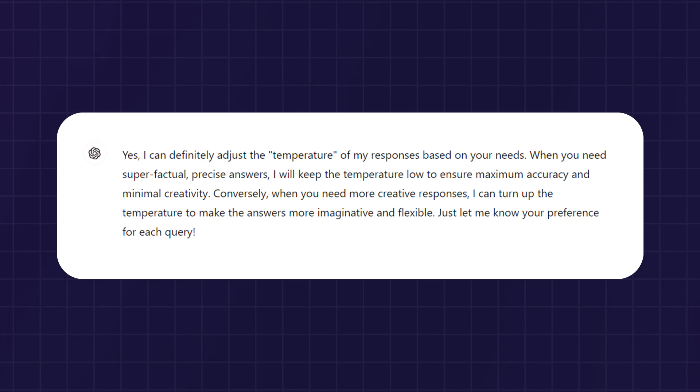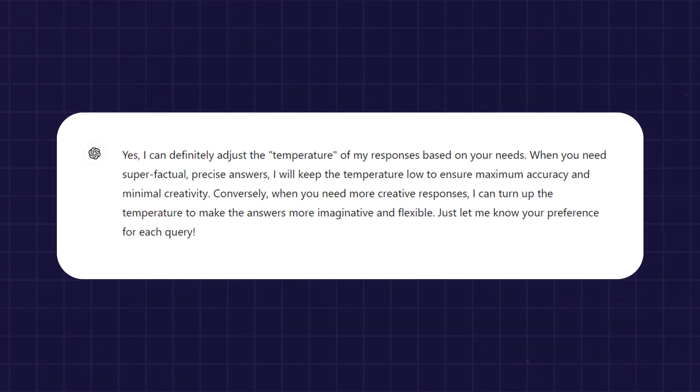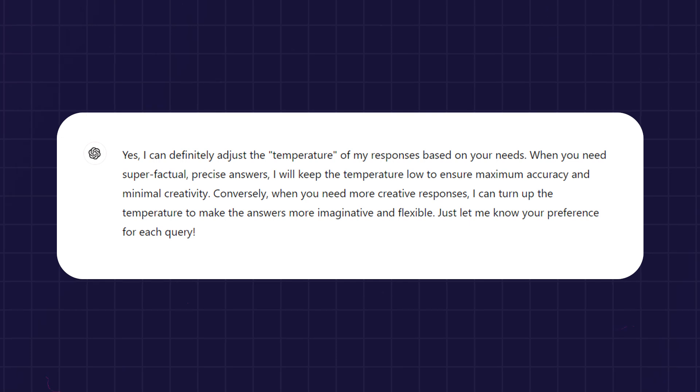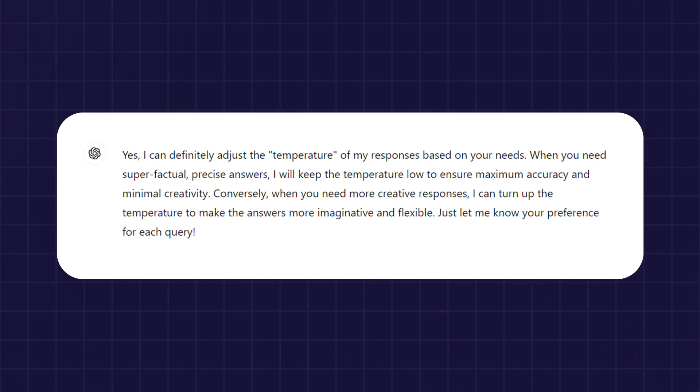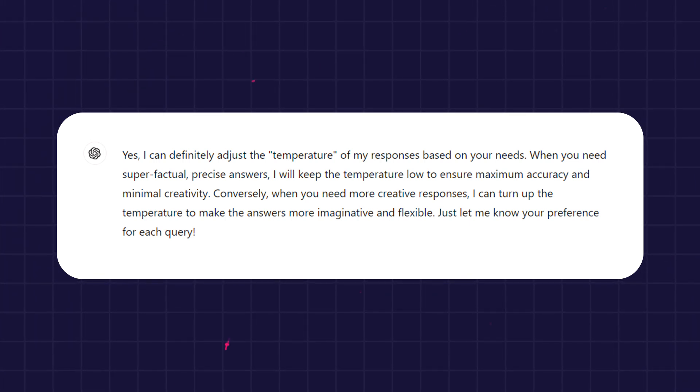Lower temperature, like 0.2, will make the responses more deterministic and focused, while higher temperature, like 0.8, will make the responses more creative and varied. I tried it myself — I asked ChatGPT to set its own temperature to 0.1 and keep on giving me studies. And it did perform in a much better way than in my first example, but my results are still mixed. Sometimes it hallucinates even with lower temperatures.